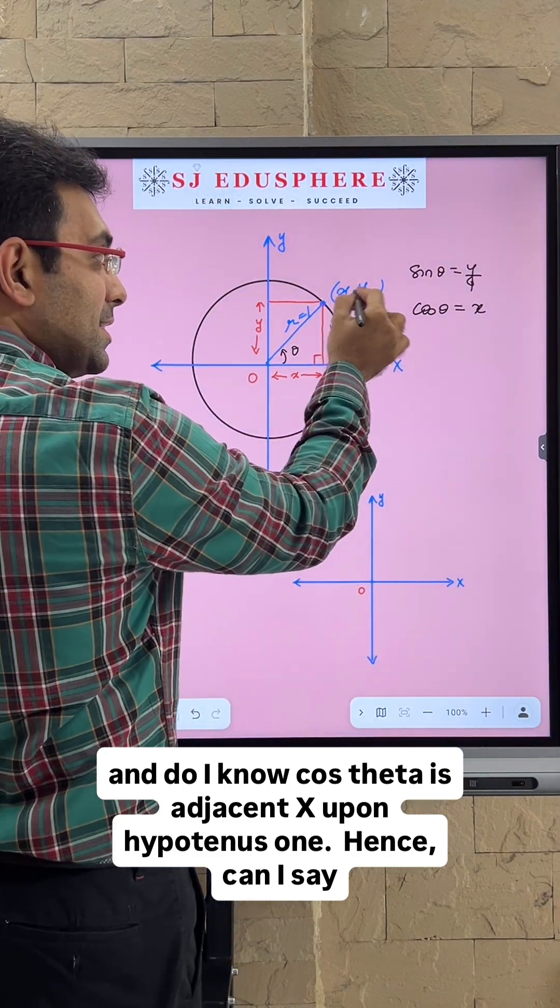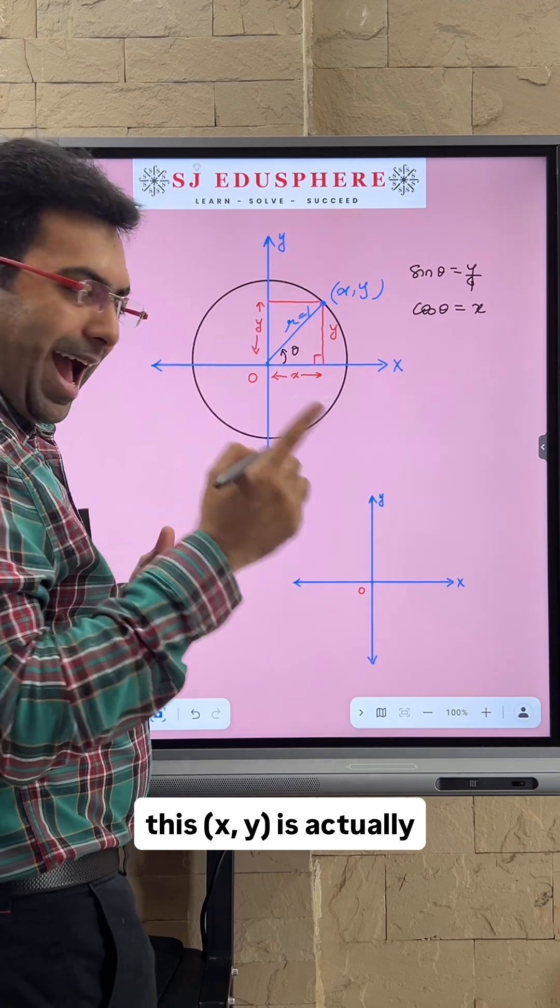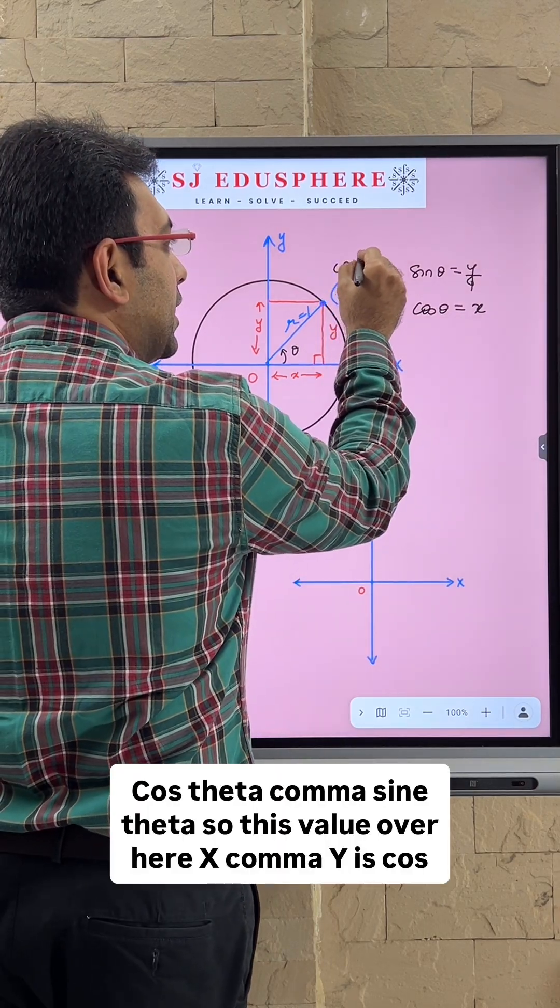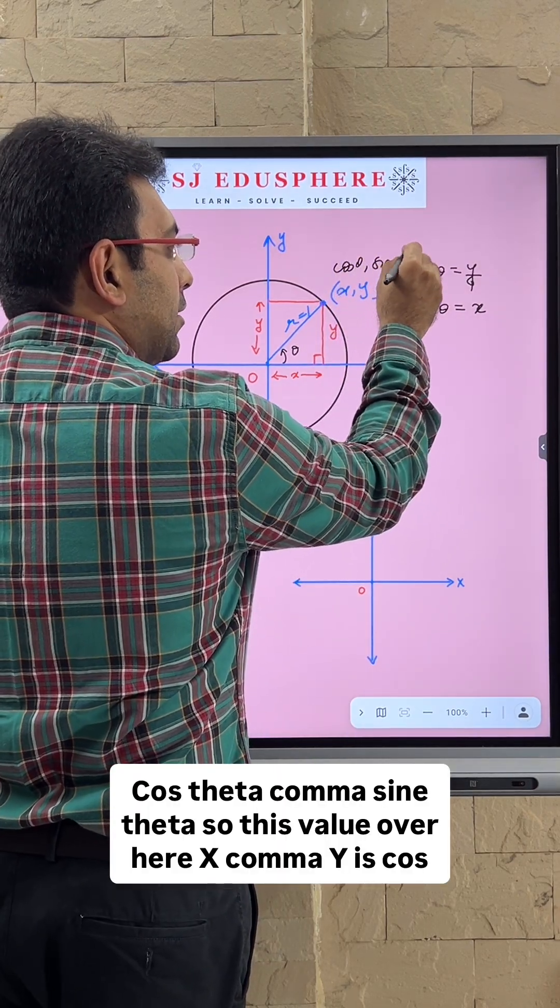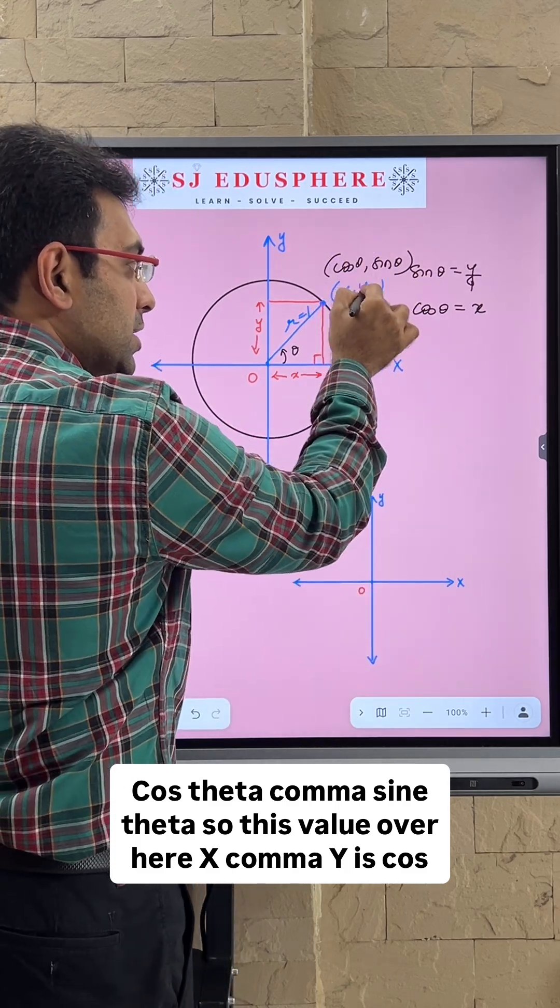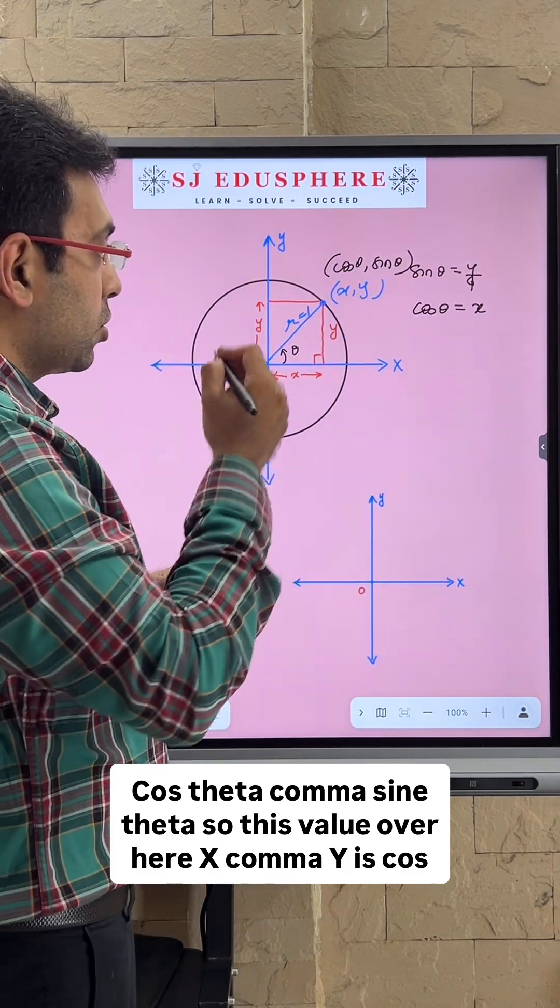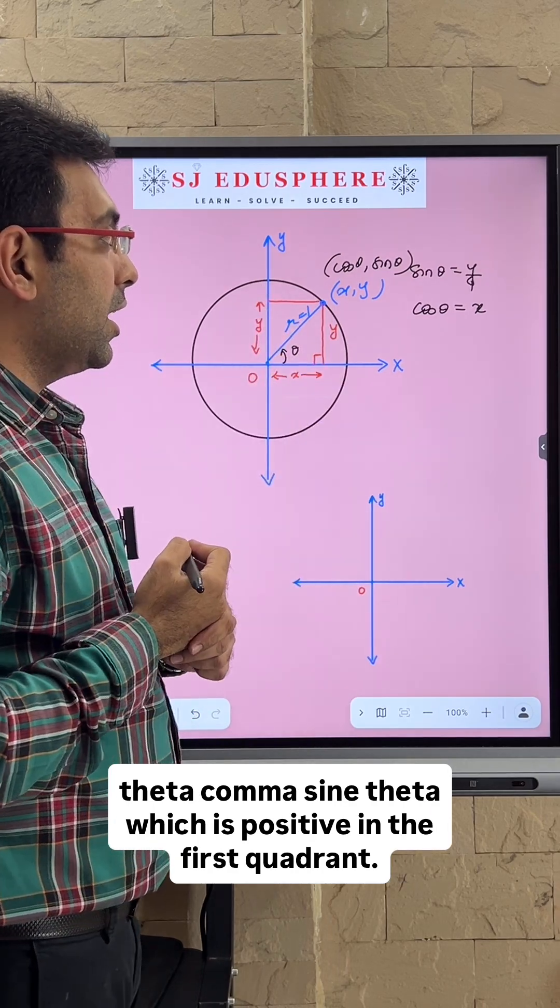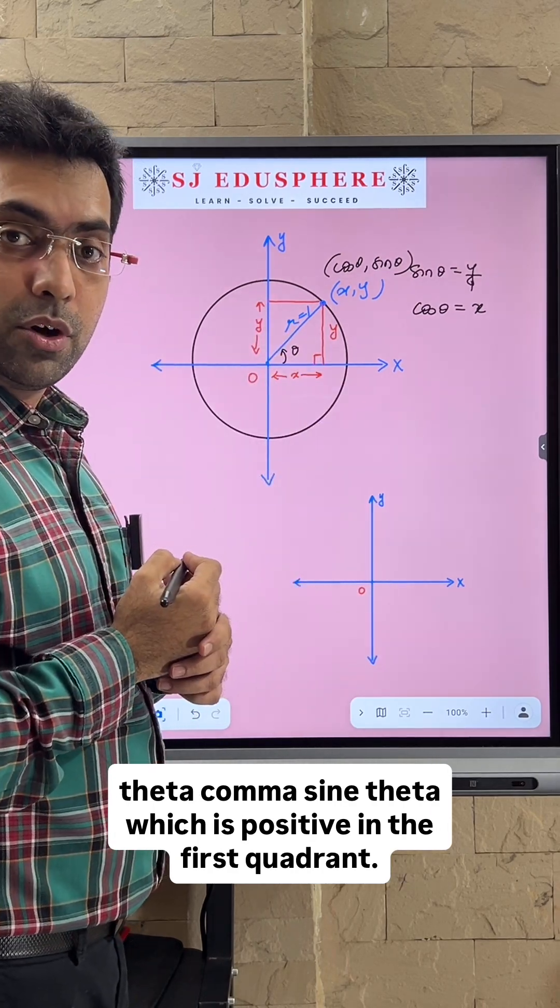Hence, this x, y is actually cos theta, sine theta. So this value x, y is cos theta, sine theta, which is positive in the first quadrant.